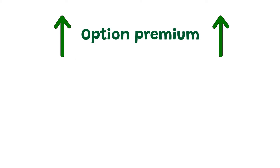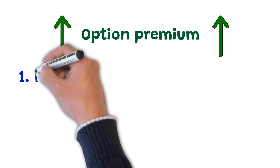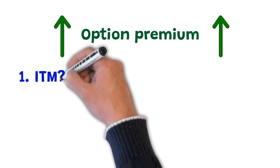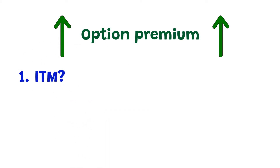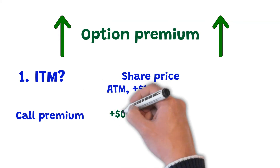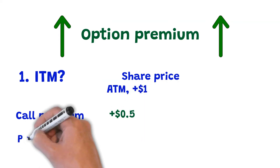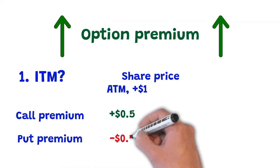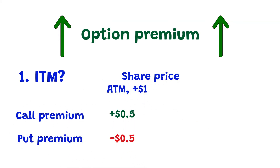Let's now see what increases the option premium. First: how far is it in the money? The more an option goes in the money — below the strike price for calls and above for puts — the higher the intrinsic value and the higher the premium. However, the relationship is not linear. For at-the-money options, for every $1 the share price goes up, the premium in general goes up half a dollar for call options and goes down half a dollar for put options.